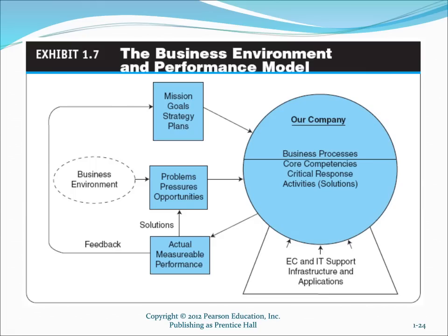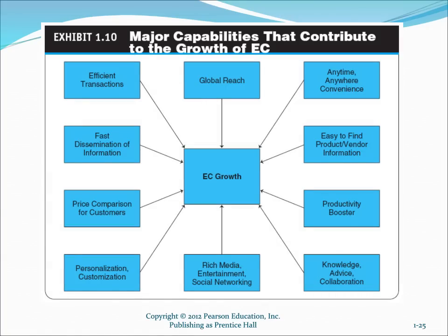Here's a graphical representation of that competitive cycle model. You can see the business environment creating opportunities and pressures. An organization is driven by its mission, goals, strategy, and plans, which drive the development of various business processes and competencies to address those issues. Performance levels are measured and feed back into mission and goals. The major capabilities contributing to e-commerce growth include efficient transactions, global reach, anytime-anywhere convenience, and more.